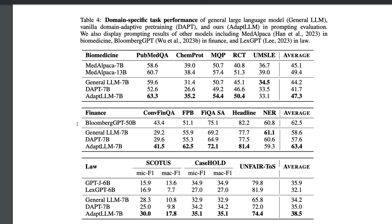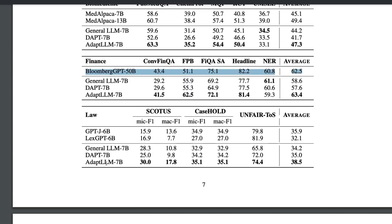The 7-billion parameter AdaptLLM model is much more parameter-efficient than the 50-billion parameter Bloomberg GPT. Looking at overall averages, AdaptLLM — which uses reading comprehension training on top of the general LLM rather than DAPT — scores comparably or better than Bloomberg GPT's 50-billion parameter model, with a similar trend observed for the law domain as well.